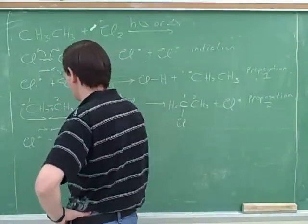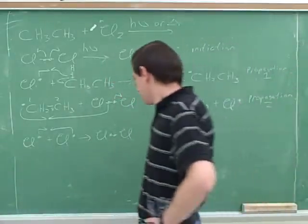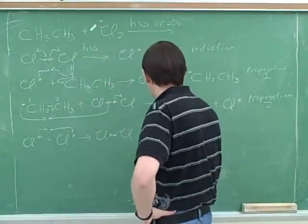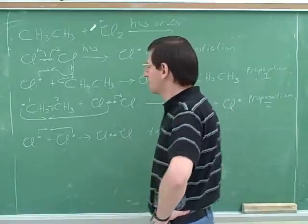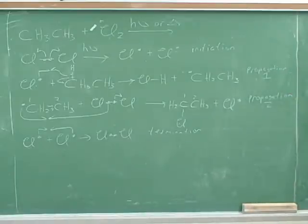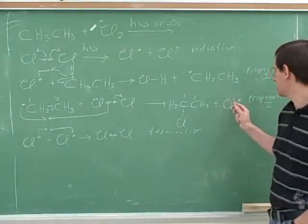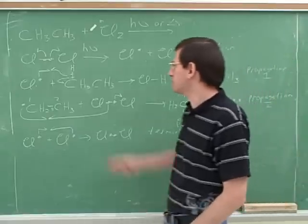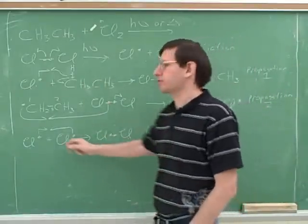Touching? Pretty close to touching. This is called a termination. If chlorine, so most of the time this chlorine radical that was produced in propagation step one, two, is going to bump into another ethane. But every once in a while this chlorine radical is going to bump into another chlorine radical.